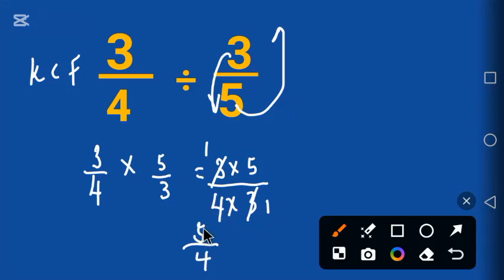How many times can 4 go in 5? It will go once and it will remain 1 over 4. This is the correct answer.